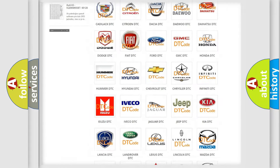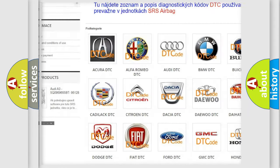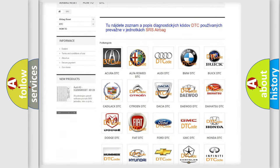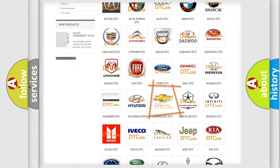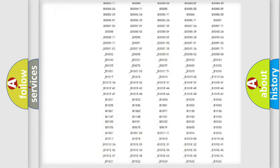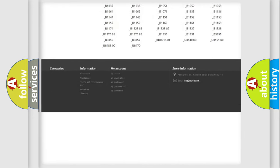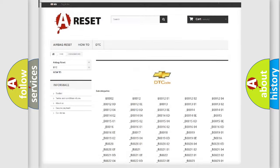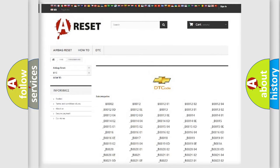Our website airbagreset.sk produces useful videos for you. You do not have to go through the OBD2 protocol anymore to know how to troubleshoot any car breakdown. You will find all the diagnostic codes that can be diagnosed in Chevrolet vehicles, and also many other useful things.